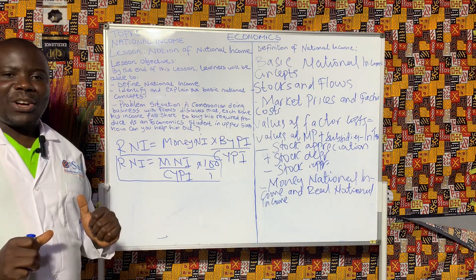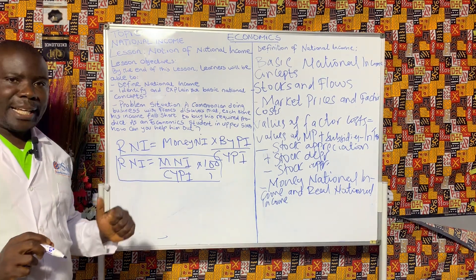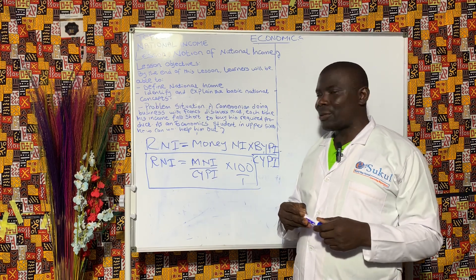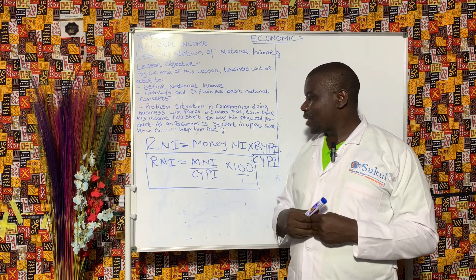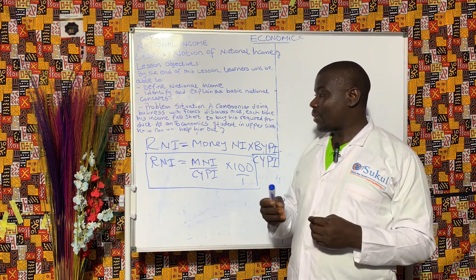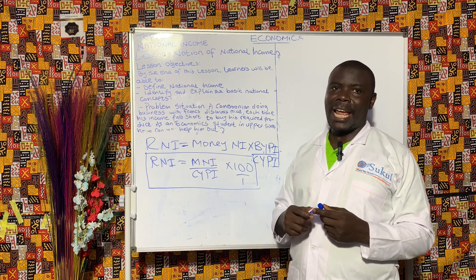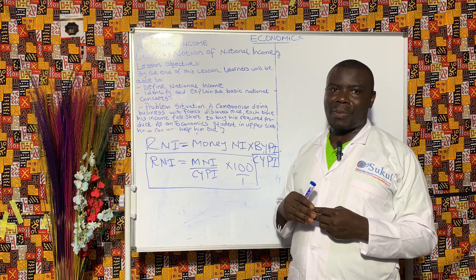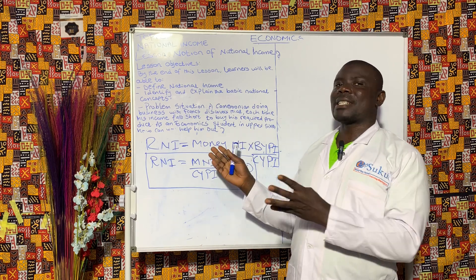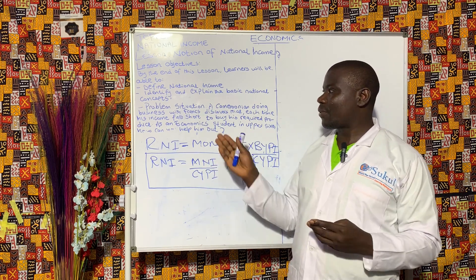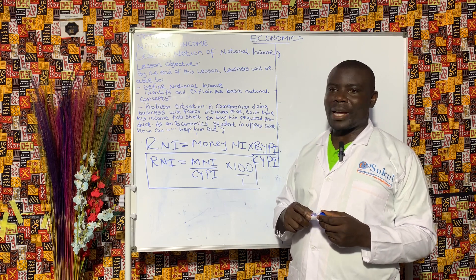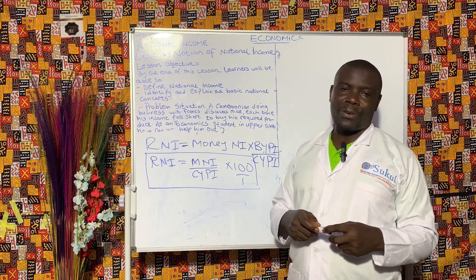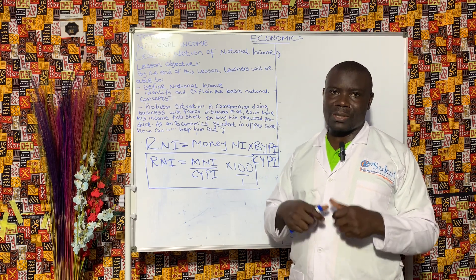We are going to end at this point. In the next video, which is part two of the lesson, we are going to look at net property income from abroad and some lesson integration with regards to what we are currently studying — the notion of national income. See you next class.